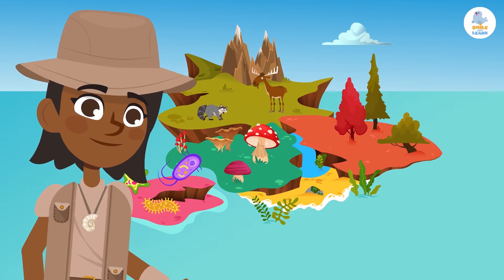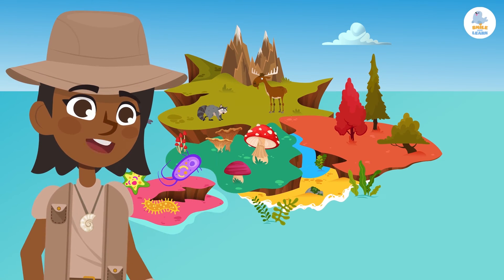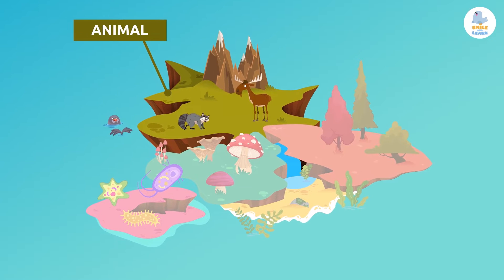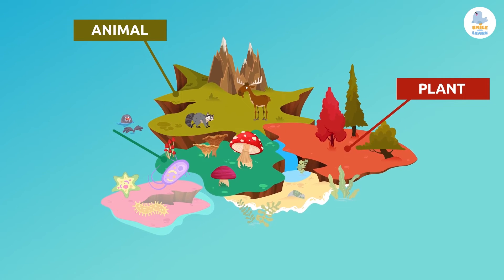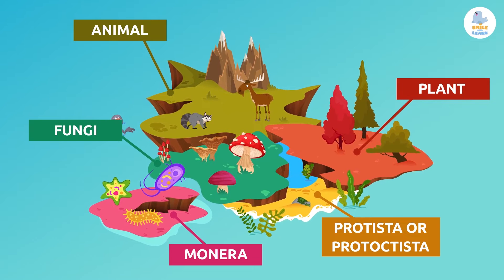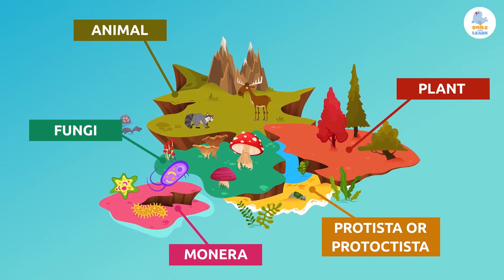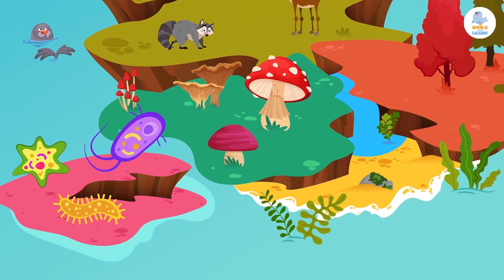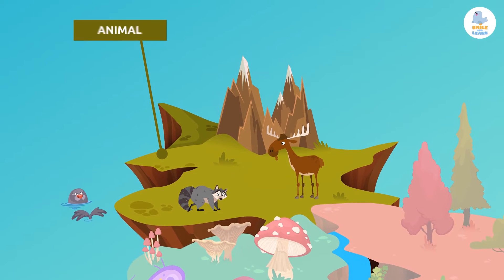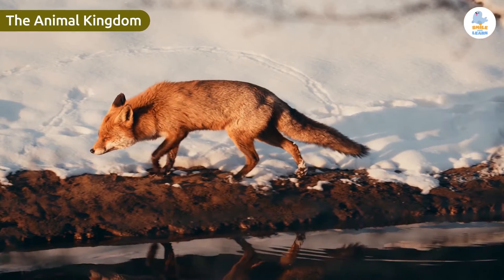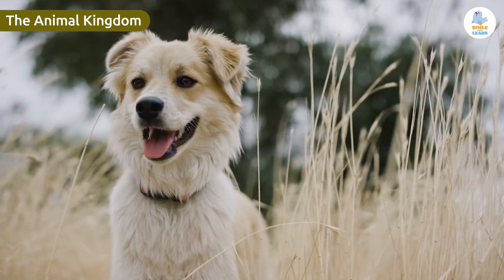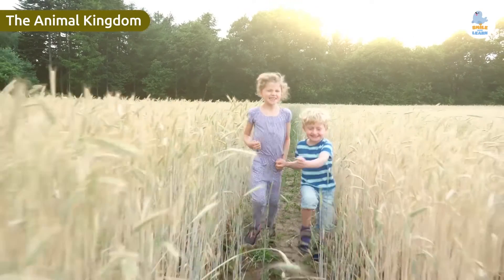There are many ways to classify living things, but the most common way is to group them by kingdoms. There are five kingdoms in total. We divide them this way because the living things in each kingdom have common characteristics, and they're significantly different from those in other kingdoms. The first kingdom we'll talk about is the animal kingdom. There are many, many animal species — and did you know that human beings are also animals?